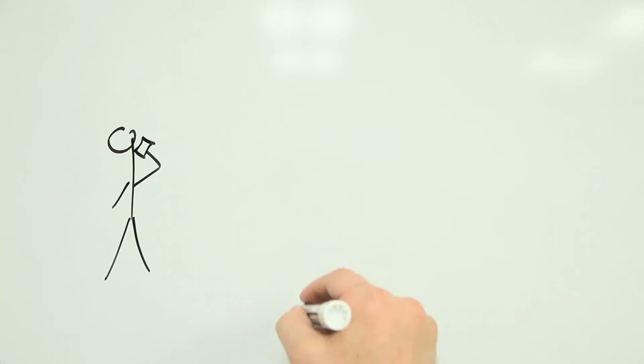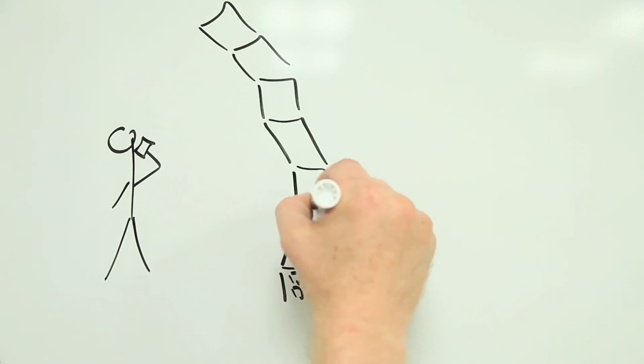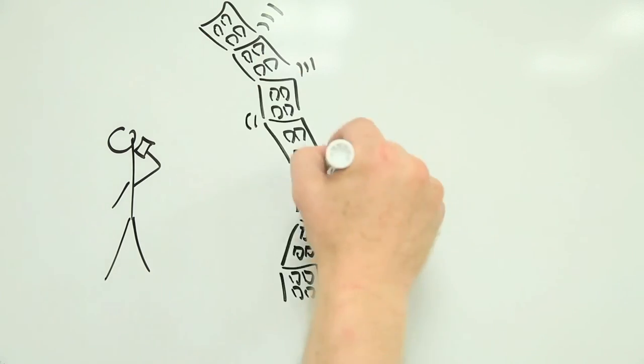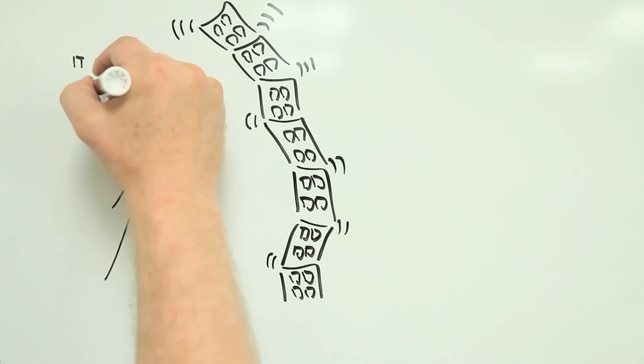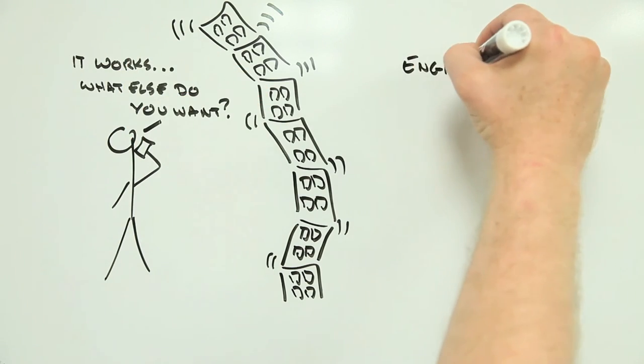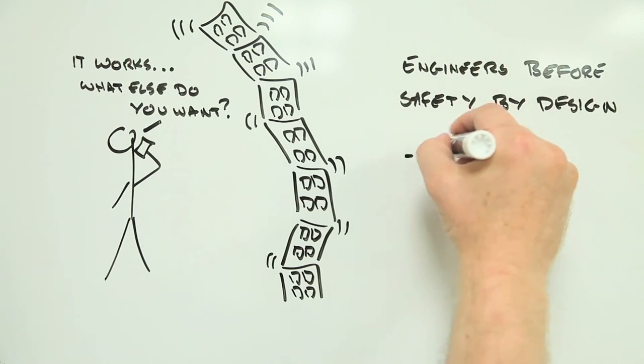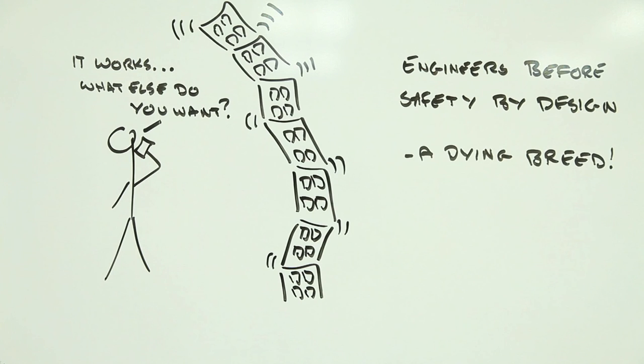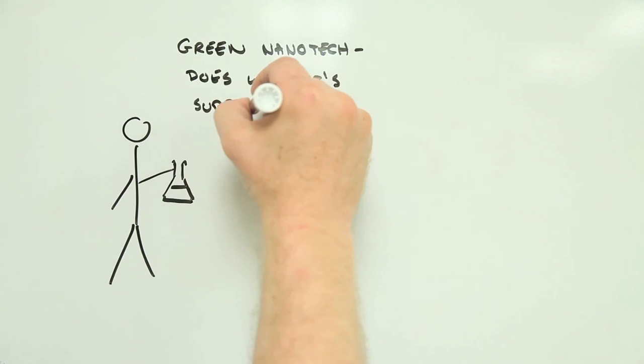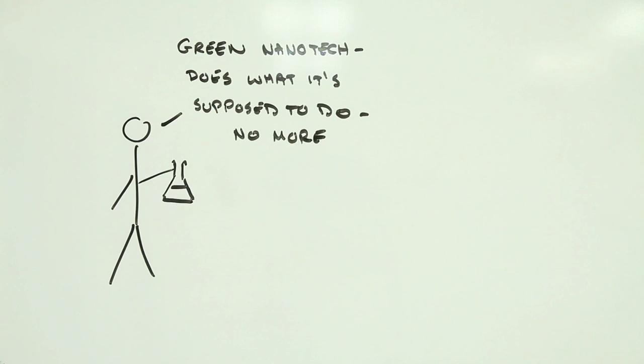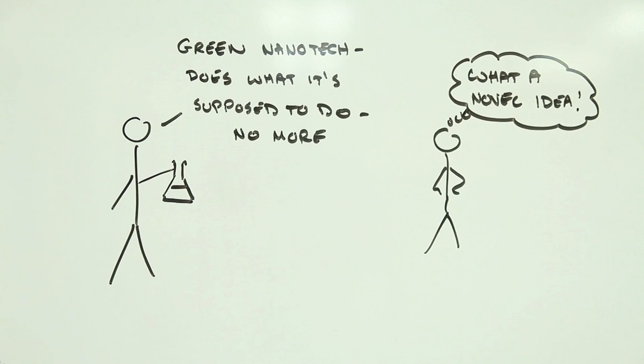Because advanced materials depend on designing and engineering substances to behave in a certain way, it's a relatively small step to including safety parameters in the design process, as long as we know what makes something harmful and how to reduce it. This safety by design approach is already being used in areas like green nanotechnology, an innovative approach to developing high performance materials that pose minimal risk to people and the environment.